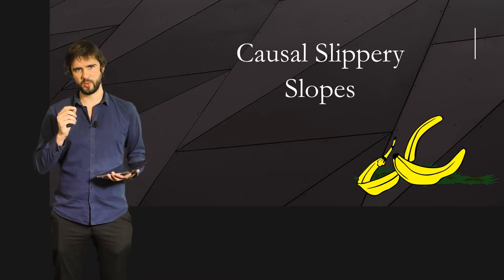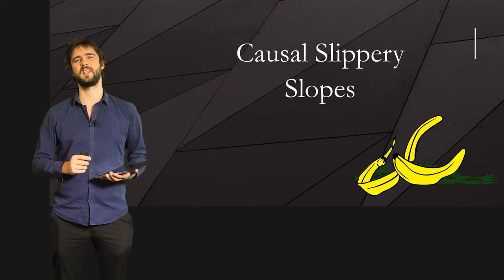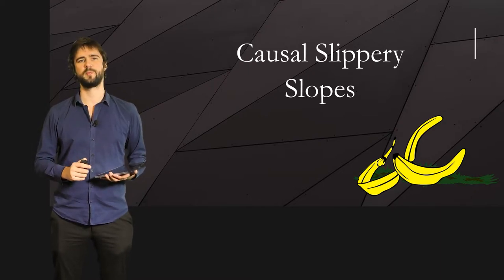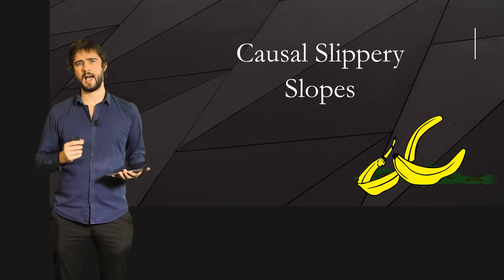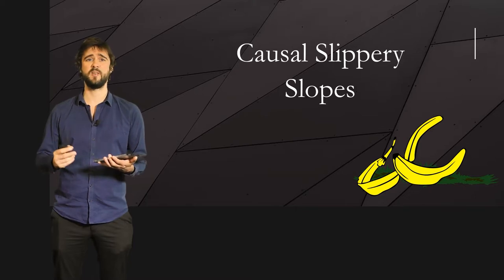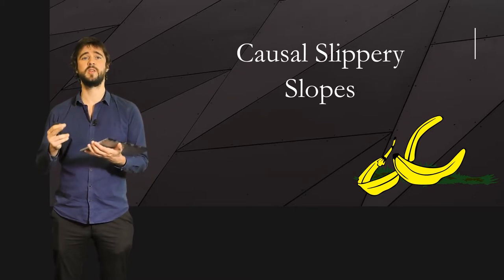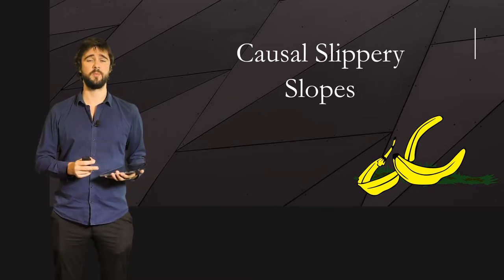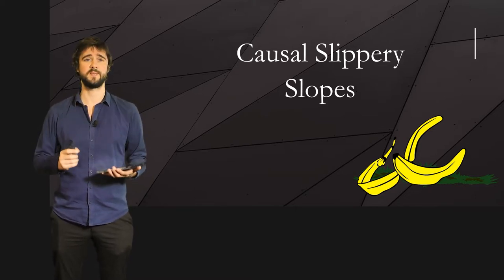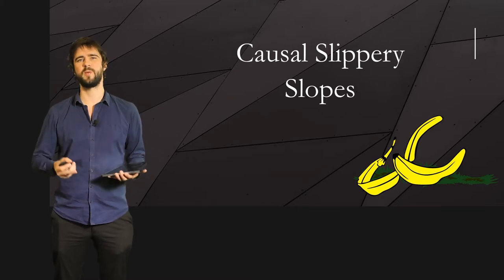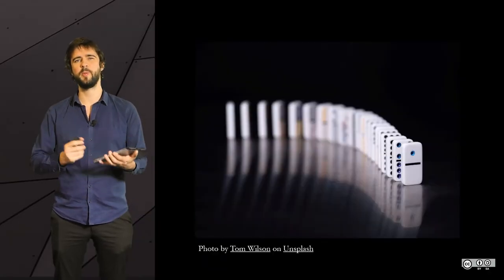We are going to talk more specifically about the causal slippery slope. The idea behind this fallacy is that a chain of related events leads to an important outcome, generally negative. So we can use the metaphor of the domino effect.